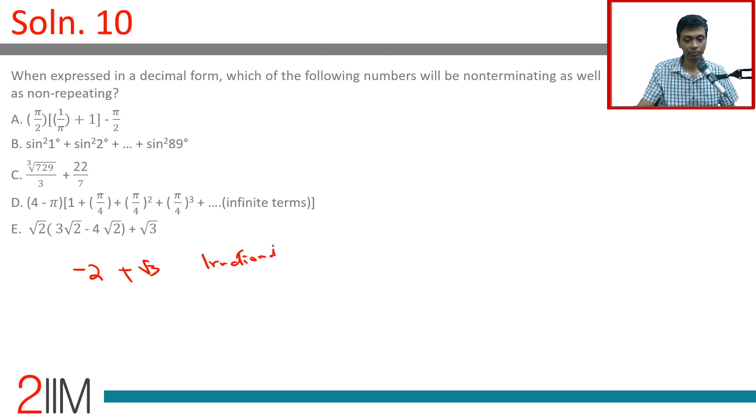-2 + √3. This is irrational. We have a winner! Everything else falls in place, but this one does not.